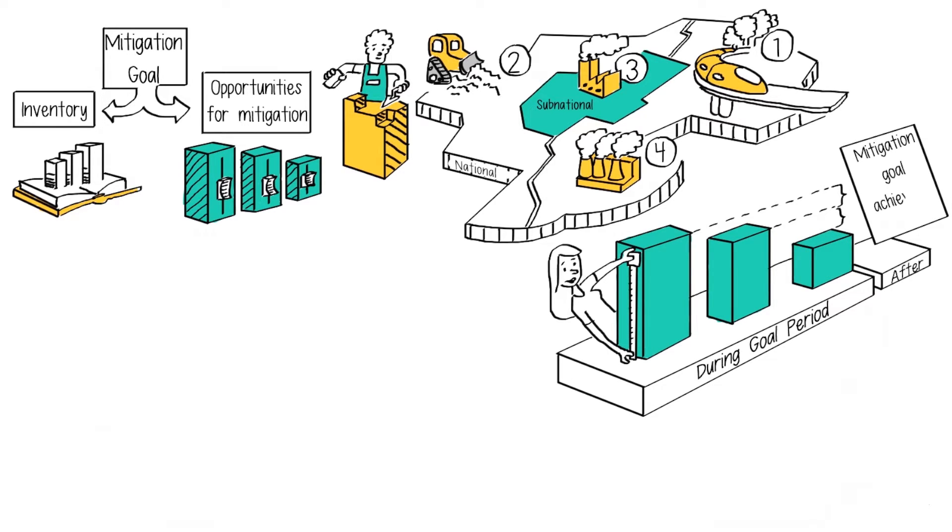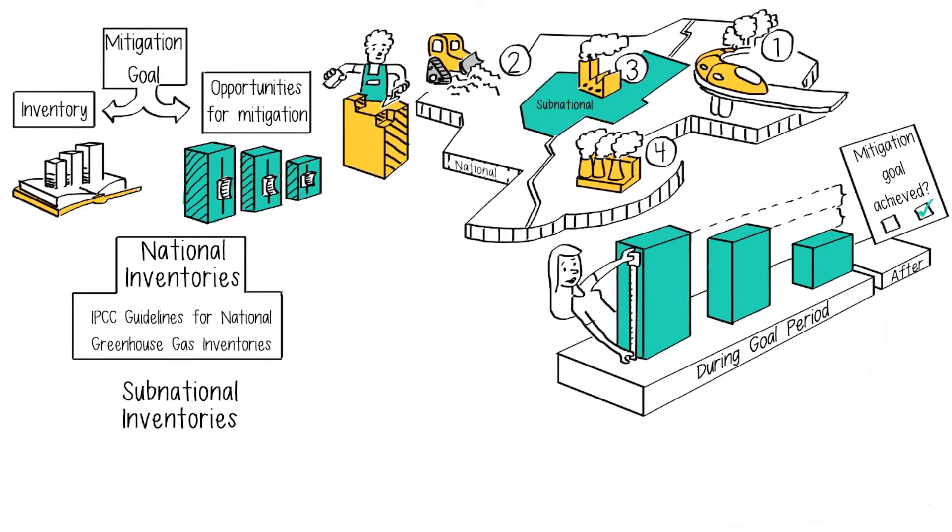At the end of the goal period, it is needed to assess whether the mitigation goal has been achieved. The national and sub-national inventories differ in terms of the guidelines that are used to generate them. With national jurisdictions, the IPCC guidelines for national greenhouse gas inventories are used. At the sub-national level, the global protocol for community-scale greenhouse gas emission inventories, or GPC, can be used along with any relevant IPCC methods.